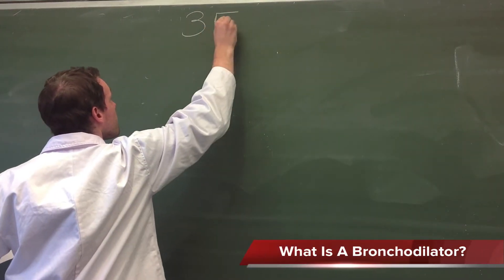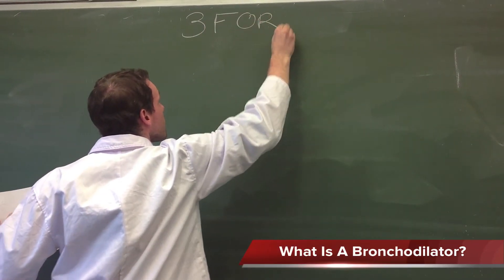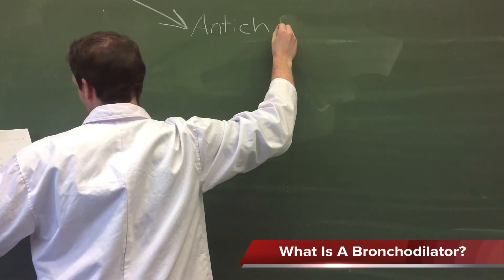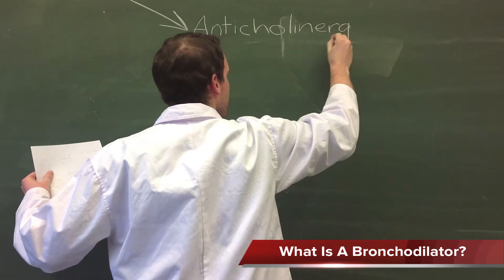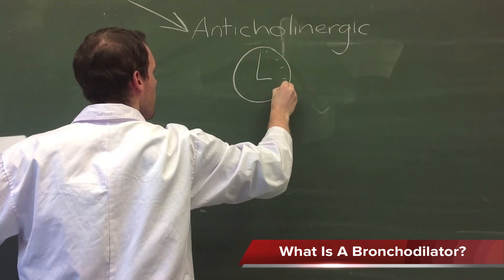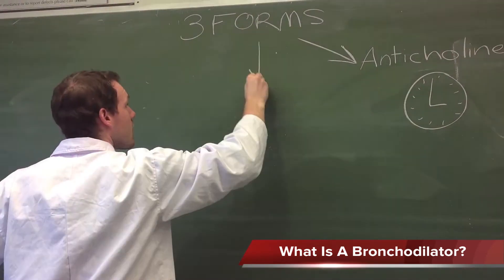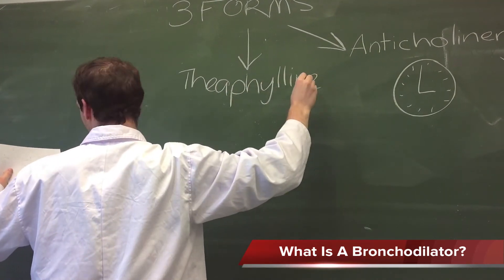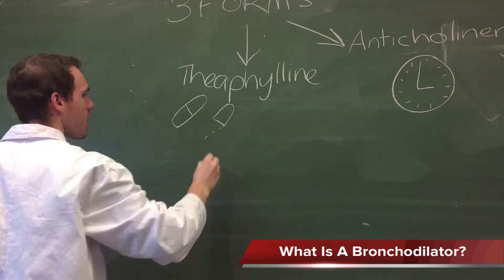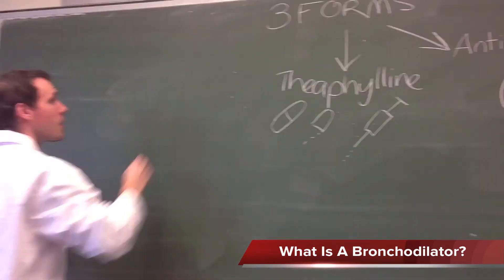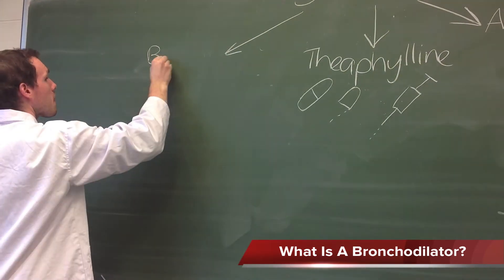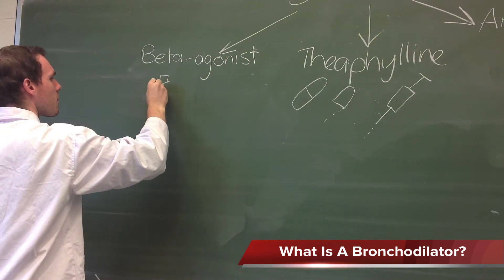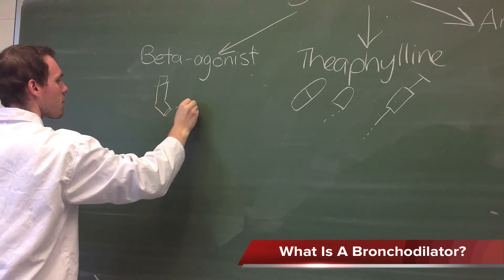Bronchodilators come in three forms: beta-agonist, anticholinergic, and theophylline. Anticholinergic bronchodilators are mainly used for chronic respiratory diseases such as chronic obstructive pulmonary disease and take the longest to work. Theophylline bronchodilators are taken either by swallowing or injecting intravenously; they stay in the system for a long time but can have many side effects. Beta-agonist bronchodilators are the most common form and are inhaled as a mist, used as preventative medication or as a quick fix when an attack occurs.